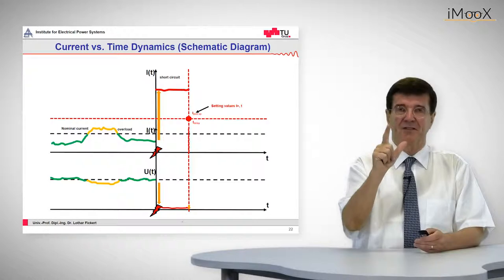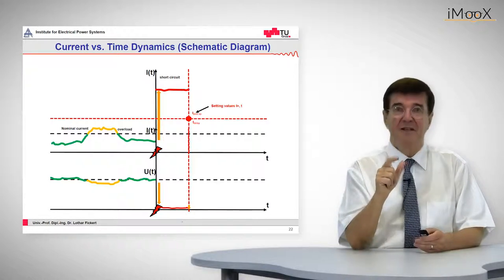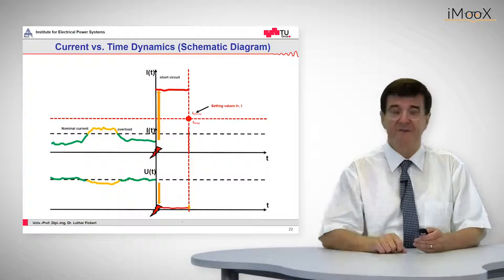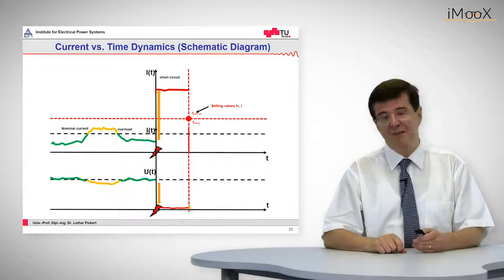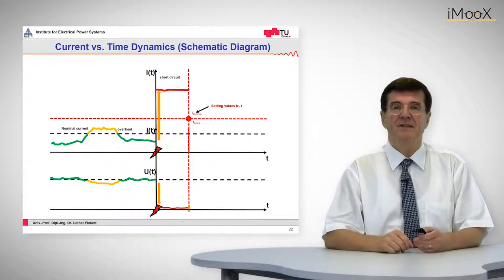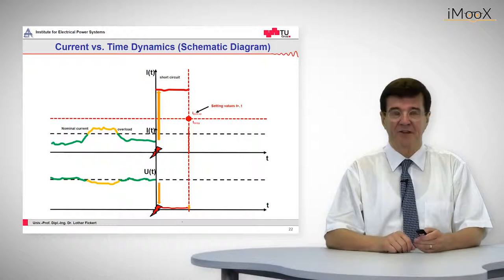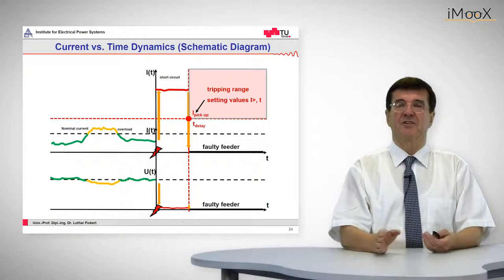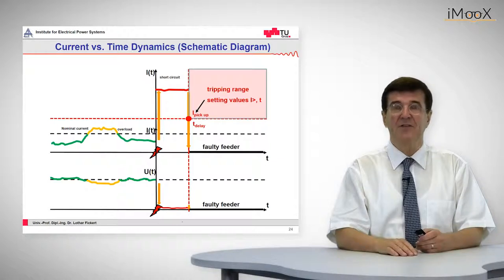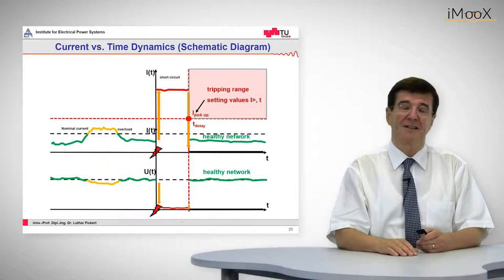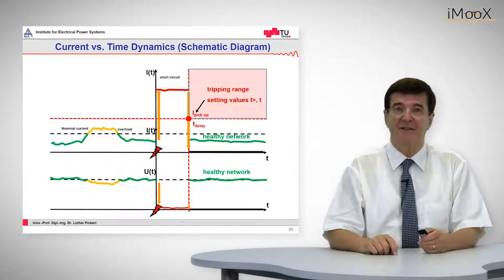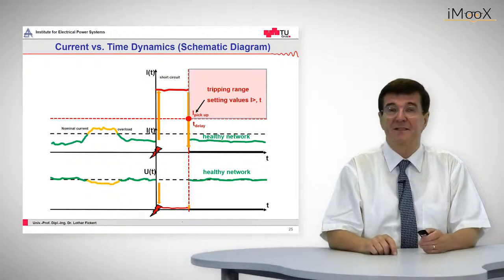The current goes on until the protection comes in. The protection has two setting values relevant at this point. The first is the pickup value, which is of course below the 5 kilo-amps so that the protection sees there is a short circuit. The second one is a time delay — for example 0.4 seconds. When this time has elapsed, the protection device will trip the circuit breaker. The current will go down to zero since the circuit breaker has opened the faulty feeder, and the voltage on the faulty line goes down to zero. The voltage in the healthy network has recovered since there is no fault anymore in the grid.